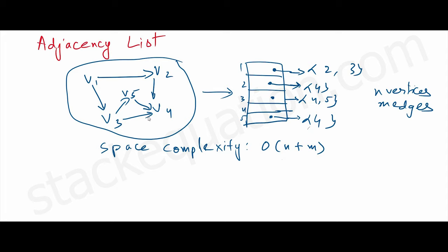If we have n vertices and m edges, the space complexity of this adjacency list comes down to O(n + m).